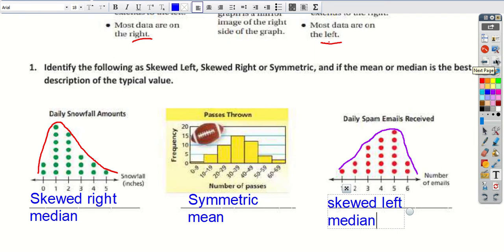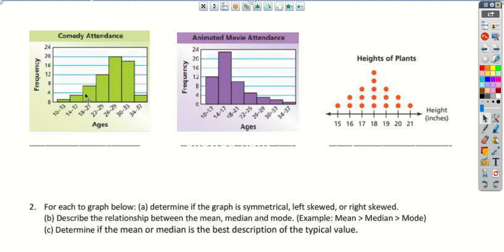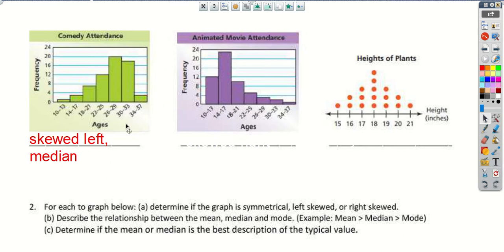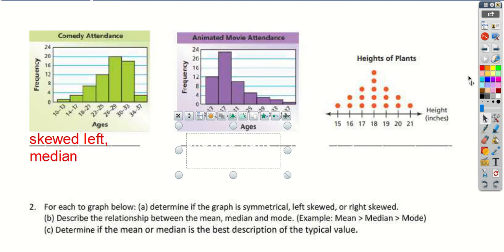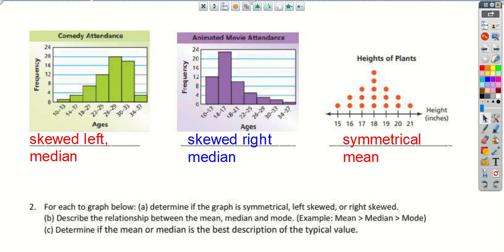Here are a couple more — try these ones first, pause it here, try it, and we'll take a look at the answers. Taking a look at the first one, remember the tail is on the left side, so this is skewed to the left, and the median would be the more appropriate choice. Remember, skewed to the left just means the data has shifted — it's stretching out to the left here, but the data is actually on the right-hand side. The second one, same thing — tail to the right, so this is skewed right. And the median is the better representation of a typical value. And last but not least, we have a symmetrical distribution, and we would want to pick the mean.